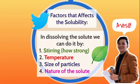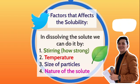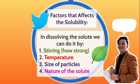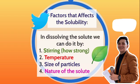Now we are going to tackle the factors that affect solubility. In dissolving the solute, we can do it by: number one, stirring — it depends on how strong or how mild you stir your solvent and solute. Also, temperature — when you are in a hotter place, meaning to say it can dissolve faster than in a colder place. Then we have the size of particles — for instance, rock salt is bigger than iodized salt, so iodized salt can dissolve faster. And then the nature of solute.